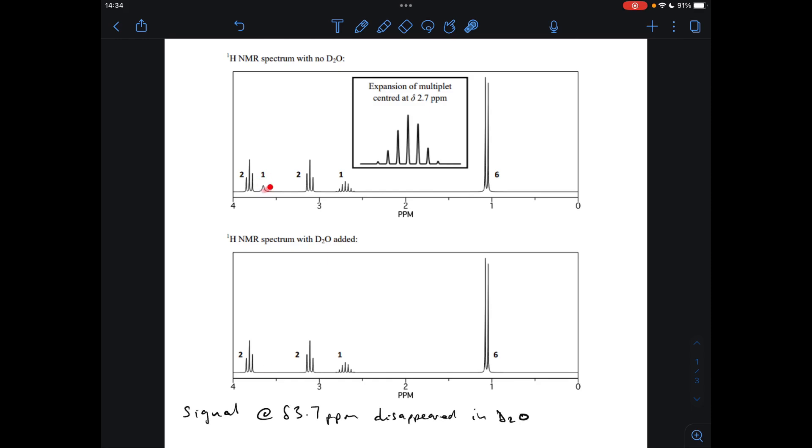You'll notice it's got an area of one, which means there's only one proton in the environment. So what are our options? Well could it be C=O-H? The answer is no because that would occur between 10 and 12 ppm, so the most likely thing is that it's an OH.